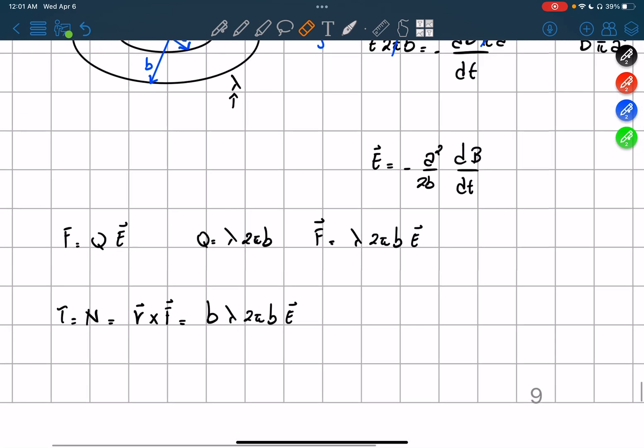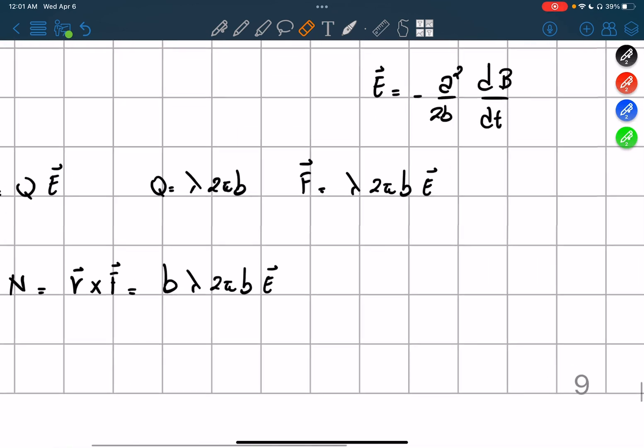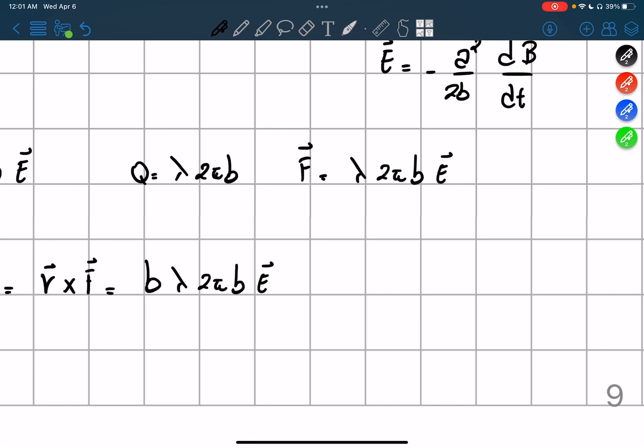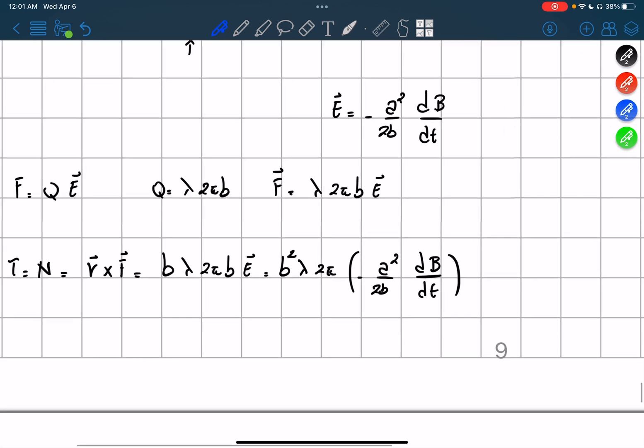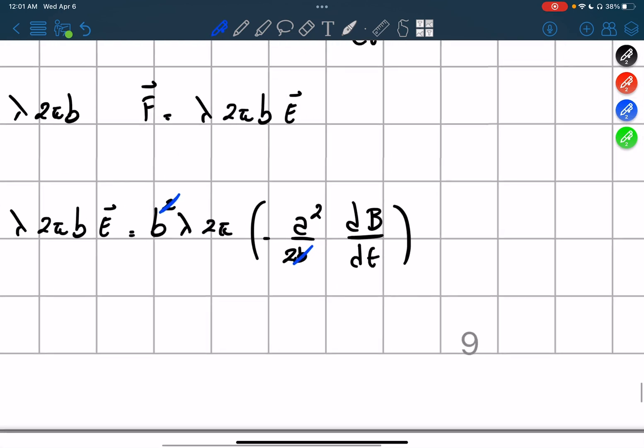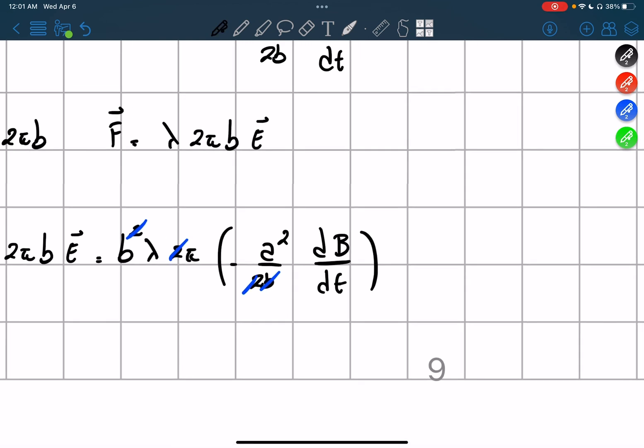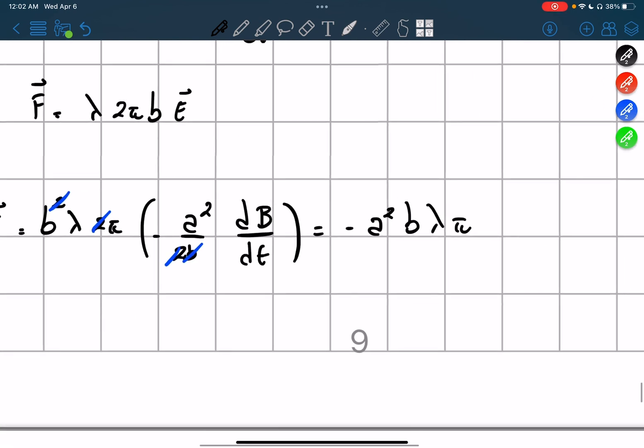And of course, we're talking about E. Let's substitute our E. So we're going to have B lambda 2 pi times B squared, and then the E, which equals negative A squared over 2B, and then the derivative of B, capital B, over dt. So we can simplify this B squared with this B, and this 2 with this 2, and then we get negative A squared B lambda pi and derivative of our magnetic field over time, which will be a vector.